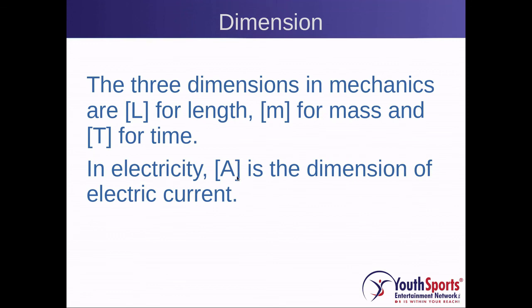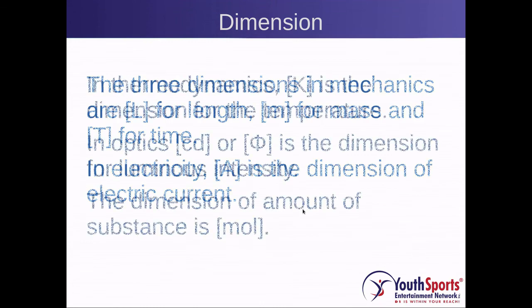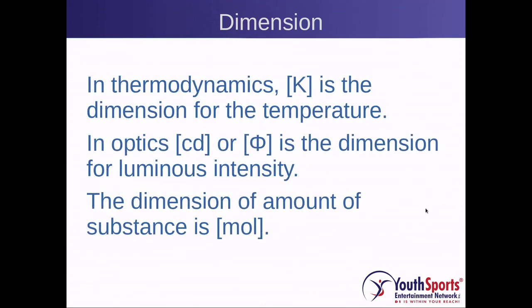A in amps is used for the dimensions of electric current. K in Kelvins is the dimension for temperature. Candela, CD, or the phi symbol is used for luminous intensity — that is the amount of light. And the amount of substance is denoted in moles, represented as MOL.